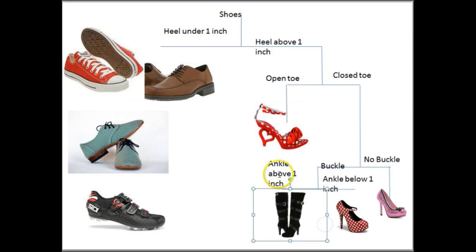Now let's run through what I did. Say I've got an unknown shoe — I start at the top. Is it a shoe? Yes. Does it have a heel above one inch? If so, go right. Is it open-toe or closed-toe? If open-toe, I get down to that cute little red and white shoe — that species, so to speak. If closed-toe, I go the other way: does it have a buckle or no buckle? Is the ankle above or below one inch? That gives me down to these individual shoe types.